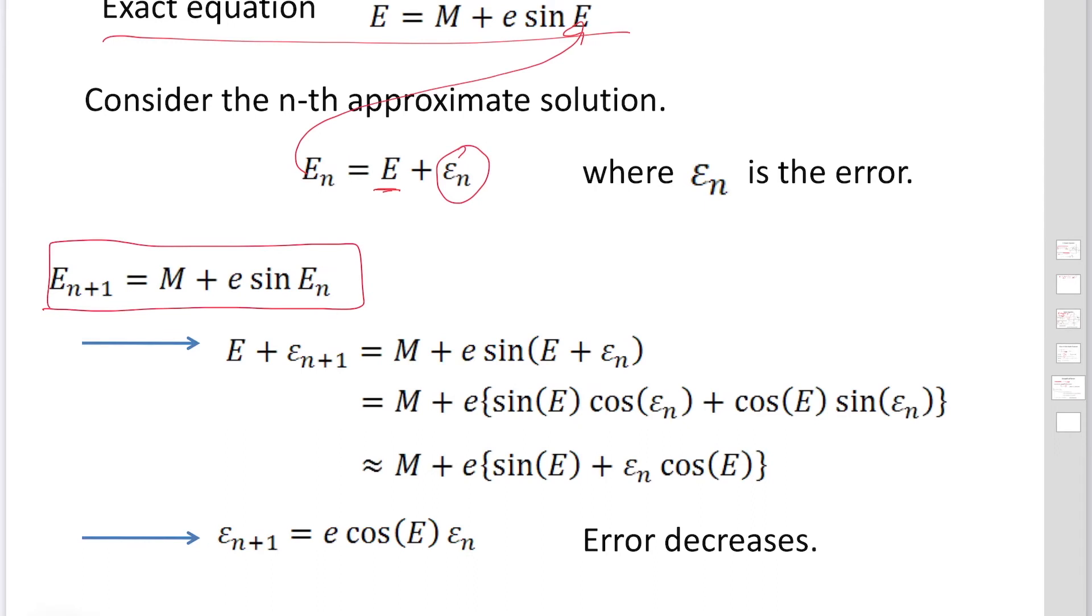Then substitute. E sub n plus 1 is, the second term is error, plus M, E sine E plus Epsilon sub n. We substitute here.